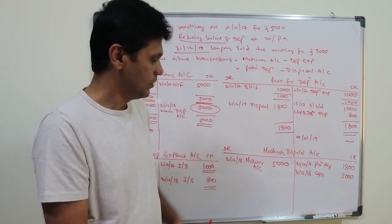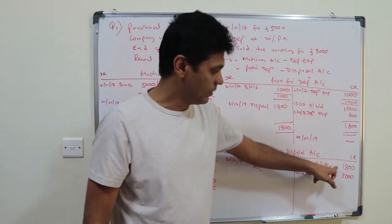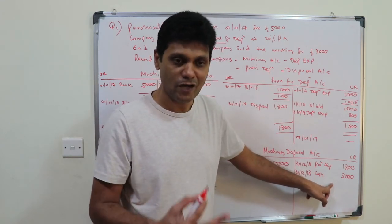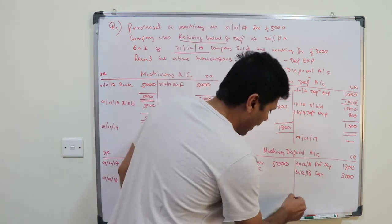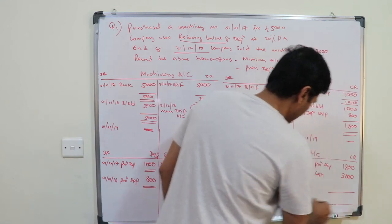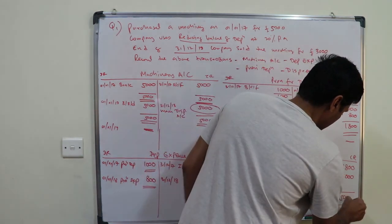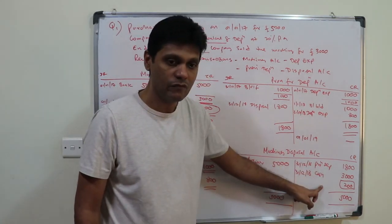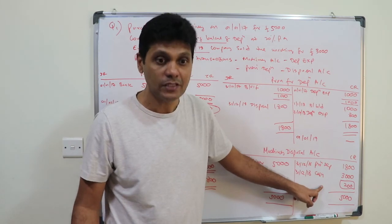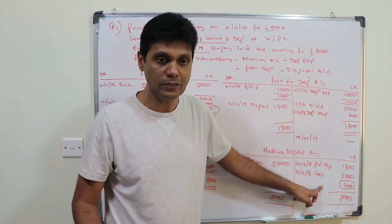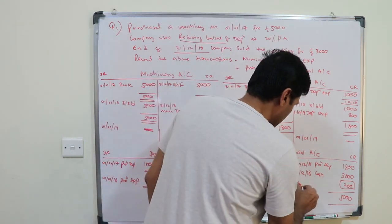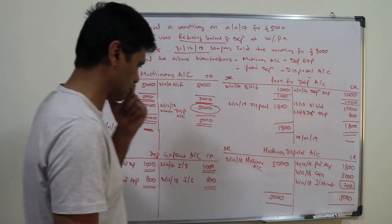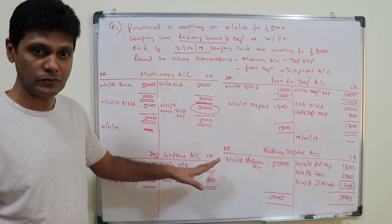There is a loss here, unlike the previous example which had a profit. The book value is five thousand less one thousand eight hundred depreciation, giving three thousand two hundred. But we could only sell it for three thousand, so there is a loss of two hundred. To balance the disposal account, debit the income statement two hundred on 31st December 2018 to record this loss on disposal.